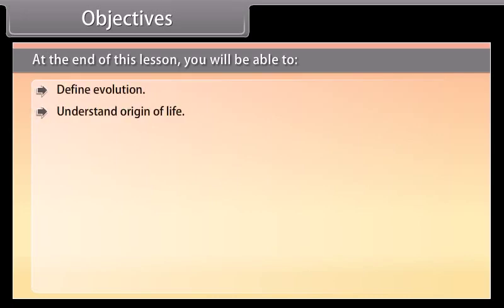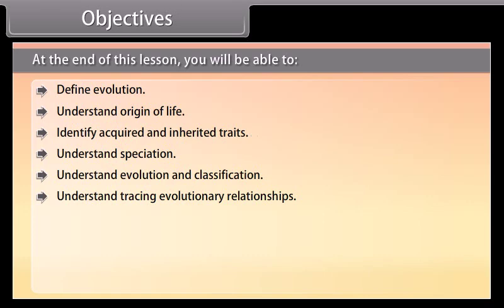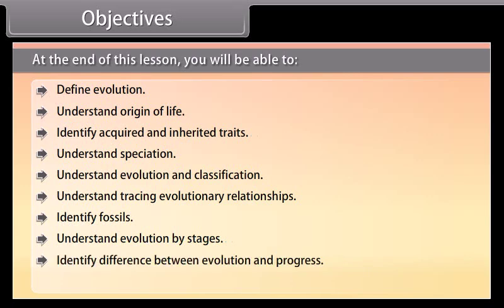At the end of this lesson, you will be able to define Evolution, understand the Origin of Life, identify Acquired and Inherited Traits, understand Speciation, understand Evolution and Classification, understand Tracing Evolutionary Relationships, identify Fossils, understand Evolution by Stages, identify the difference between Evolution and Progress, and understand the process of Human Evolution.